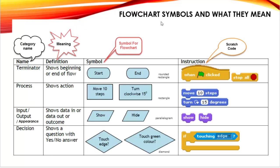The 4 flowchart symbols and what they mean are all detailed here in the table. This is the category name. Terminator, the meaning is to show the beginning or the end of a flowchart. The symbol used will be a rounded rectangle. And we only put the start or the end. And when it comes to the blocks in Scratch, it will be actually like the green flag is clicked or the spacebar is clicked or any other key on the keyboard is clicked. And when it ends, it is the stop all button.